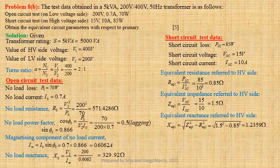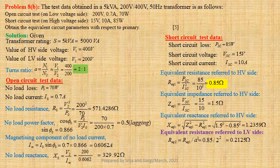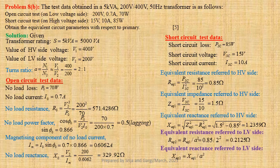Now we find equivalent resistance referred to low voltage side: Req2 equals Req1 divided by A², giving 0.85 divided by 2², equal to 0.2125 Ohm. Equivalent reactance referred to low voltage side: Xeq2 equals Xeq1 divided by A², giving 1.2359 divided by 2², equal to 0.309 Ohm. Thus we have solved the December 2017 semester exam Electrical Machines numerical problems.